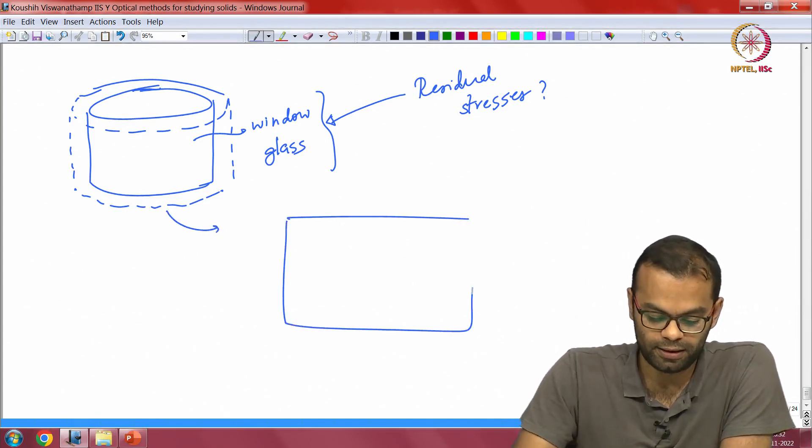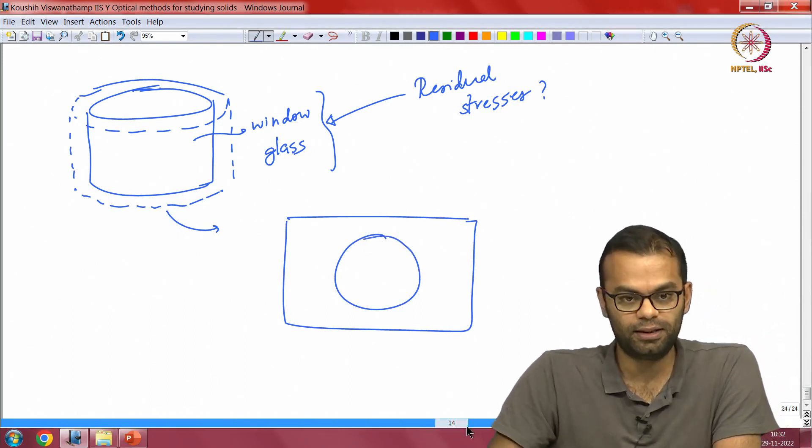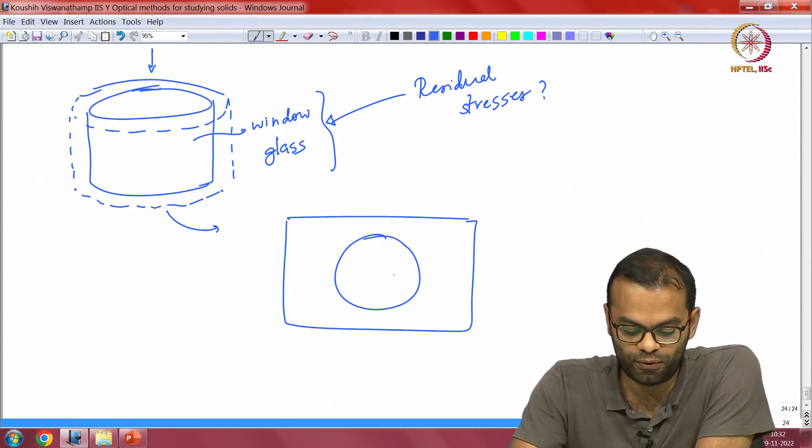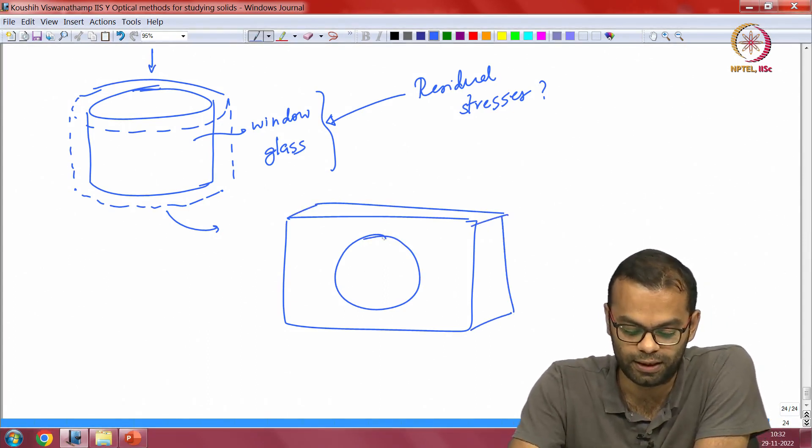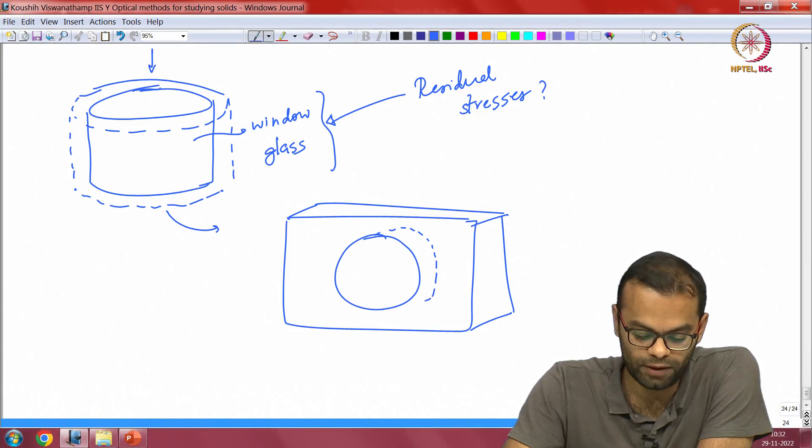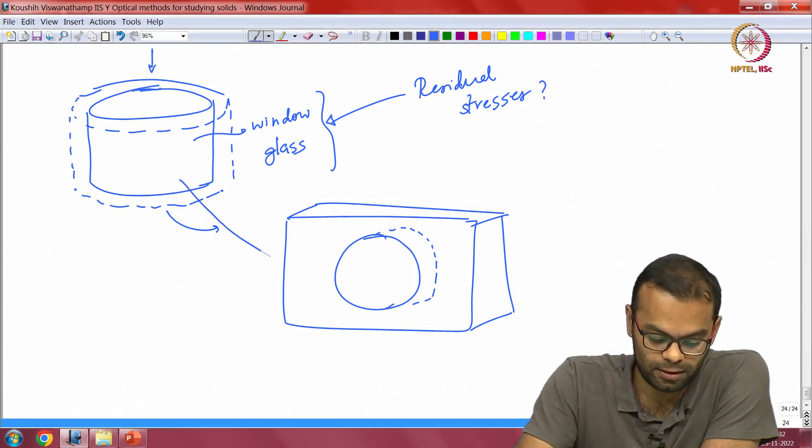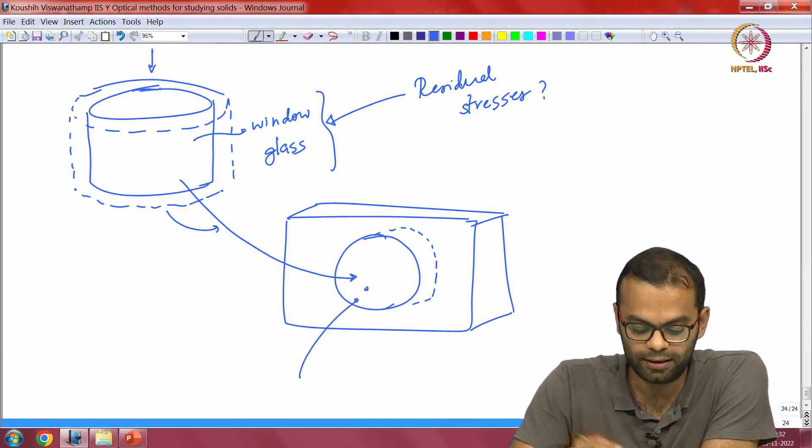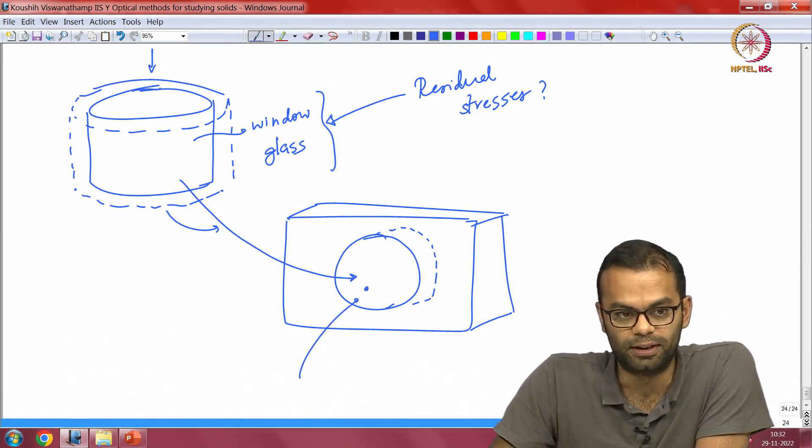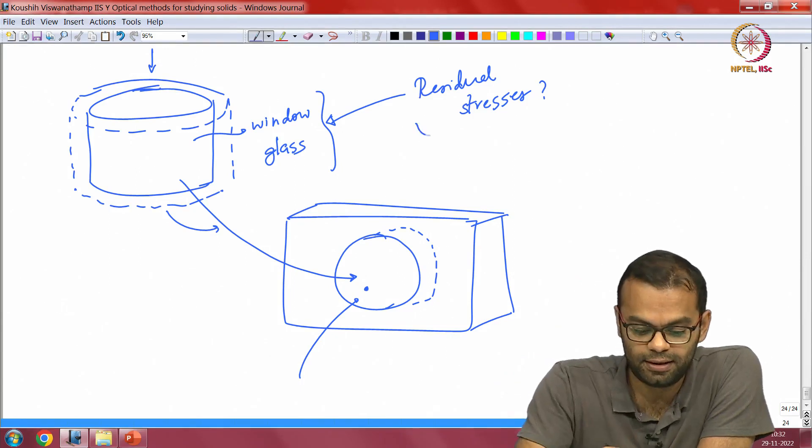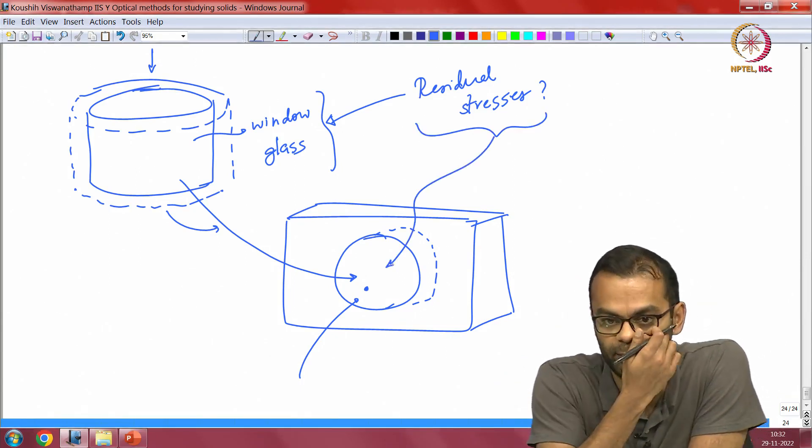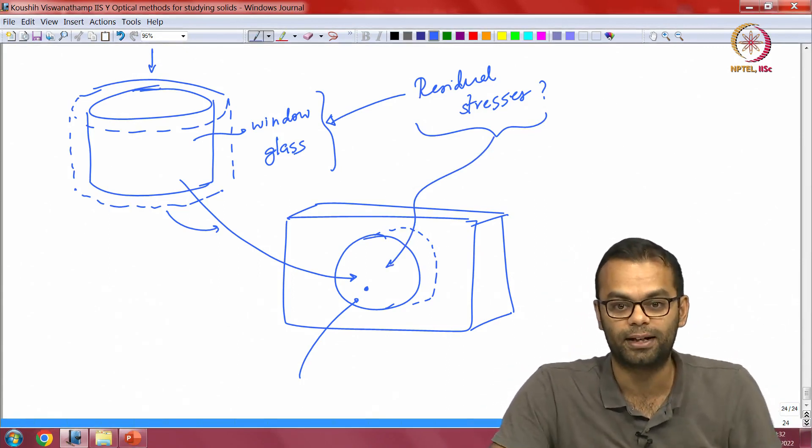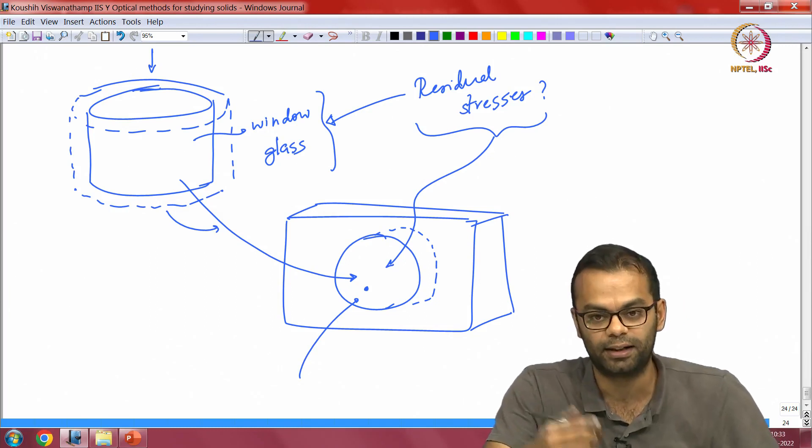For instance, if this was the window of an airplane or a window of a space shuttle, if you had some projectile come and hit the glass from the outside, then this will tell you whether this glass will fail under this type of projectile impact, what types of projectile impacts it could survive and under what conditions will it fail.